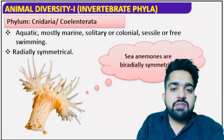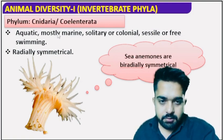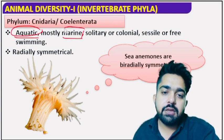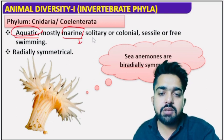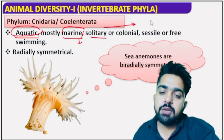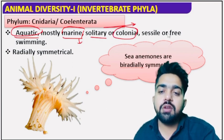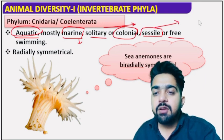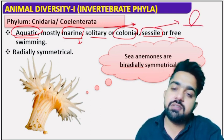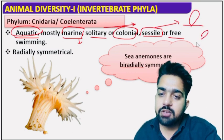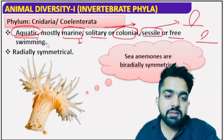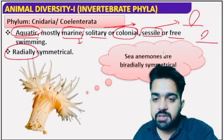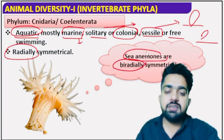In phylum Cnidaria, or Coelenterata, these organisms are basically aquatic in nature — mostly marine, meaning found in sea water, not in fresh water. They can be solitary, found individually, or in the form of colonies. They can be sessile — meaning attached to a substratum — or they can be free-living. They are basically radially symmetrical, but sea anemones are an example of bi-radially symmetrical animals.